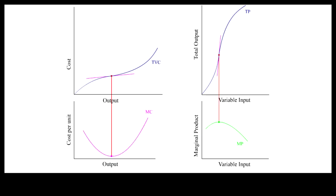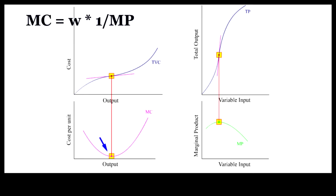Since TVC is a mirror image of TP, there is a one-to-one correspondence between segments of the two curves. When MP is increasing, MC is decreasing. When MP is decreasing, MC is increasing. So when MP reaches its maximum, MC reaches its minimum. These correspondences occur because TVC is a mirror image of TP and MC is equal to w times the reciprocal of MP, where w is equal to the constant unit cost of the variable input.